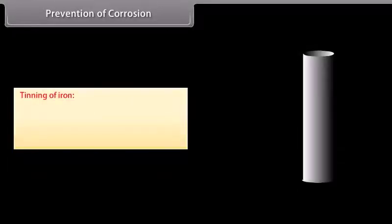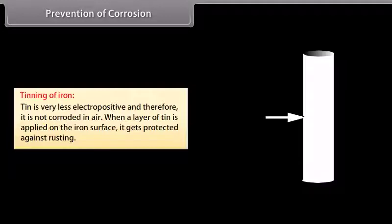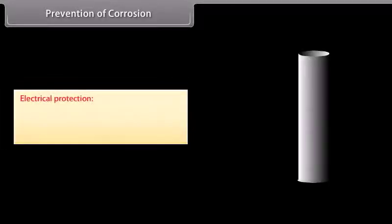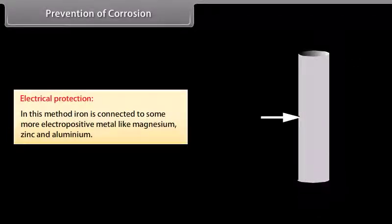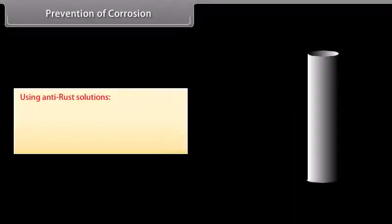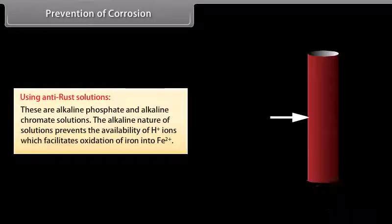Sacrificial protection - this method involves covering of iron surface with a layer of more active metal. Tinning of iron - tin is very less electropositive and therefore it is not corroded in air. When a layer of tin is applied on the iron surface, it gets protected against rusting. Electrical protection - in this method, iron is connected to some more electropositive metal like magnesium, zinc, and aluminium. Using anti-rust solutions - these are alkaline phosphate and alkaline chromate solutions. The alkaline nature of solutions prevents the availability of H+ ions which facilitates oxidation of iron into Fe+2.